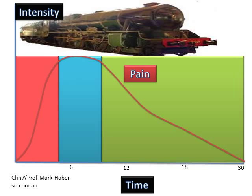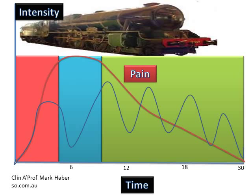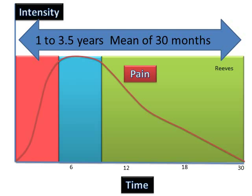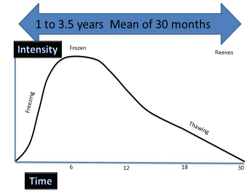It's like a locomotive full of fuel — it just gets worse and worse until the fuel runs out, and then it gradually peters off. It doesn't have mad fluctuations like other conditions such as arthritis. The whole condition lasts, on average, 30 months — just over two years. Typically, the worst of the frozen shoulder is at six months. By 12 months, things are often well on the improve, and by 18 months most symptoms have resolved. But it is about 30 months before the condition has largely resolved.